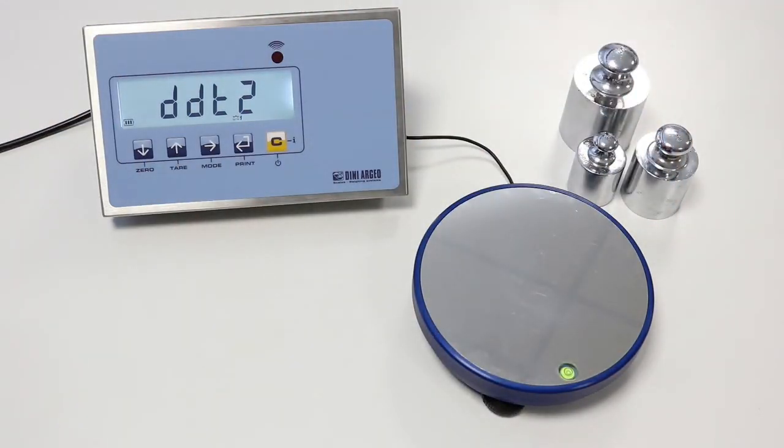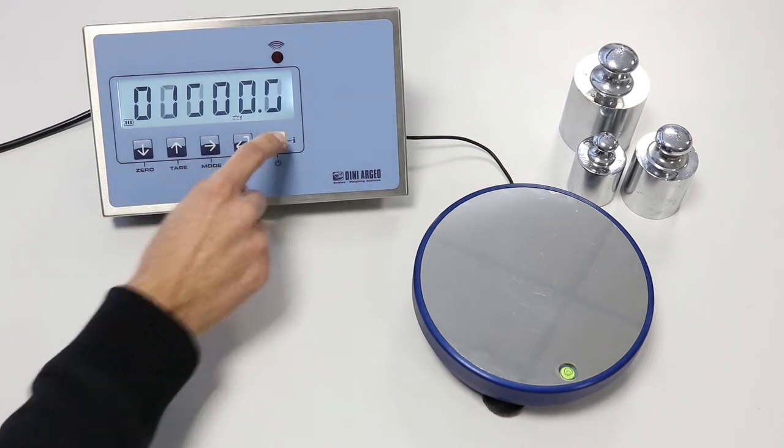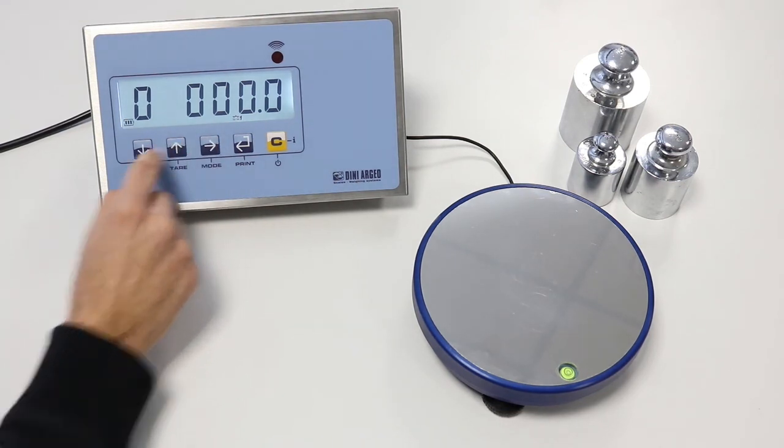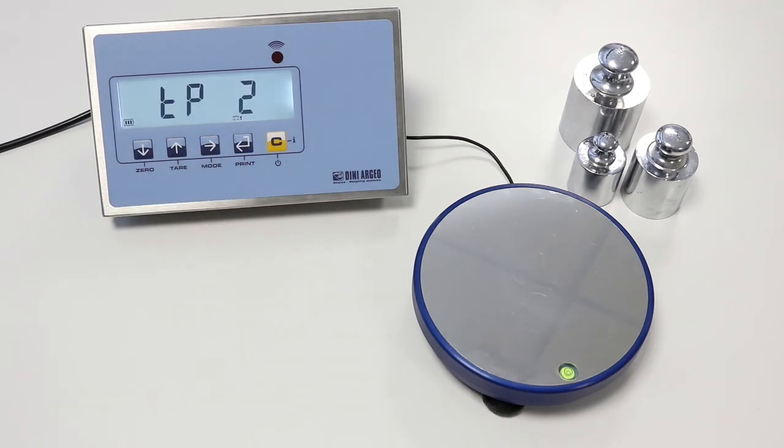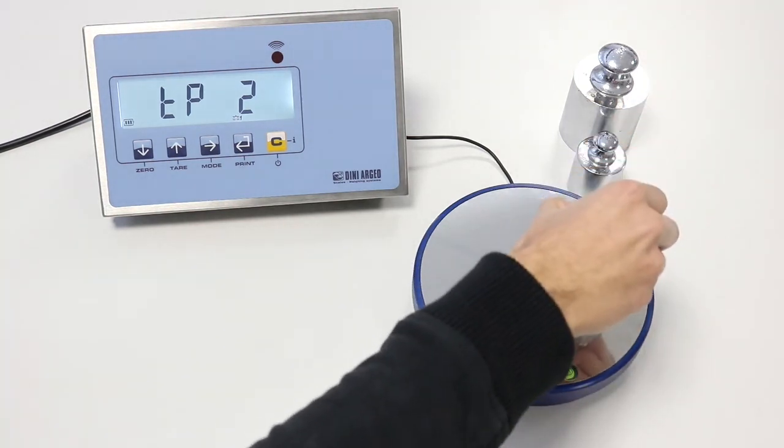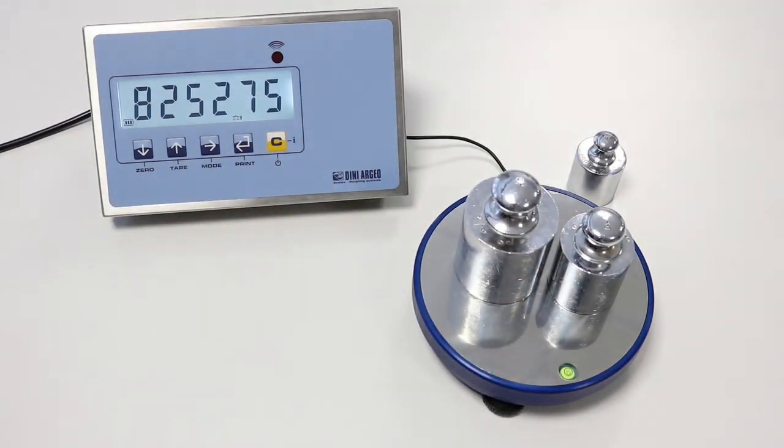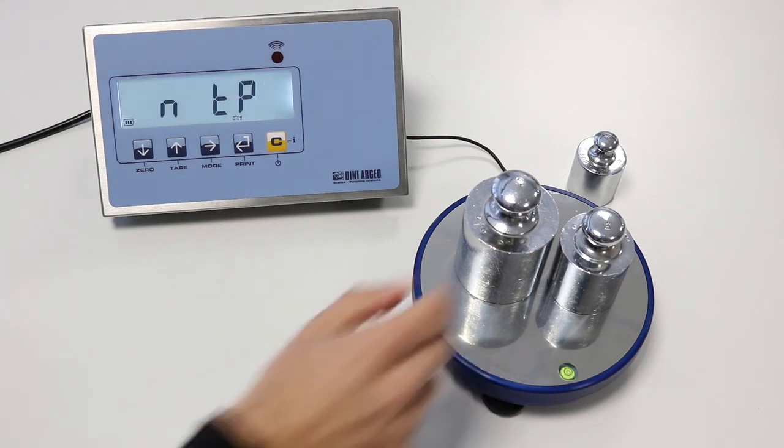DDD2 is the second calibration point. We repeat the same operation as before. We set 3000 grams and confirm with PRINT. TP2 appears. We load the sample weight on the scale. We confirm and wait for the acquisition. OK, calibration is done and we can unload the scale.